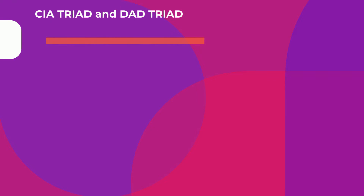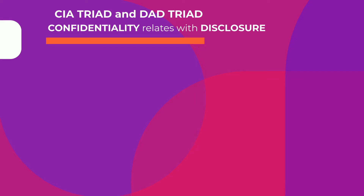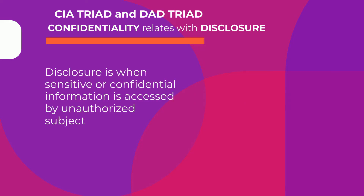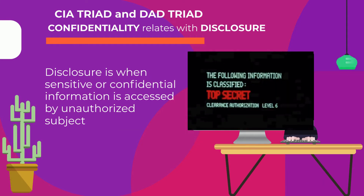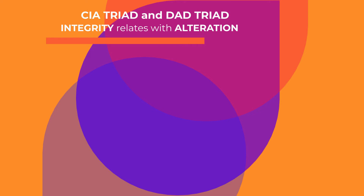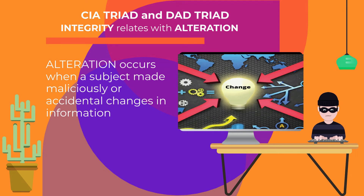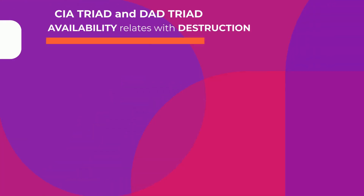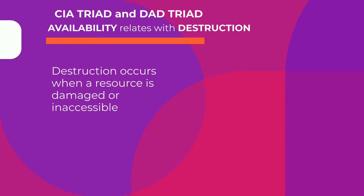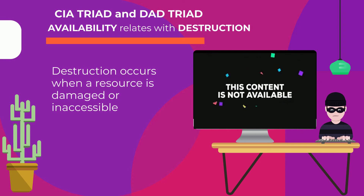The DAD Triad and SEA Triad have some relations. Confidentiality relates with Disclosure — Disclosure is when sensitive or confidential information is accessed by an unauthorized subject, which is a violation of confidentiality. Integrity relates with Alteration — Alteration occurs when a subject makes malicious or accidental changes to information, which is a violation of integrity. Availability relates with Destruction — Destruction occurs when a resource is damaged or inaccessible, which is a violation of availability.